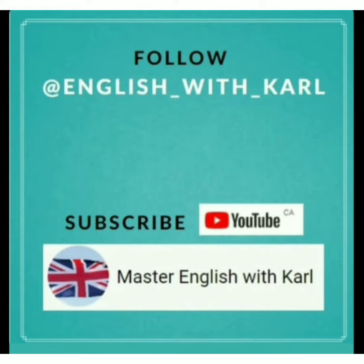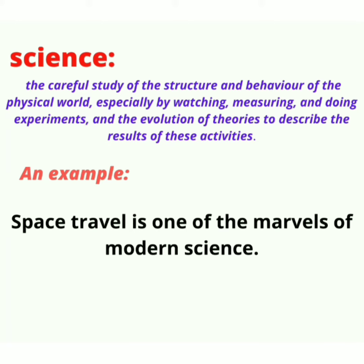Hello, today we have a special variety of some important and essential English nouns, so let's start the lesson. The first one is science. Science is a careful study of the structure and behavior of the physical world, especially by watching, measuring, and doing experiments, and the evolution of theories to describe the results of these activities. An example: space travel is one of the marvels of modern science.